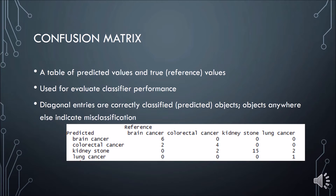So what is a confusion matrix? A confusion matrix is just a table of predicted values versus true values or reference values. It is used for evaluating the performance of a classifier.